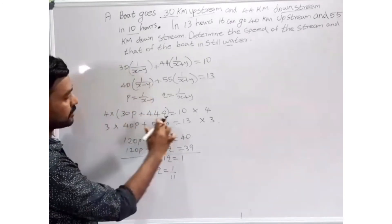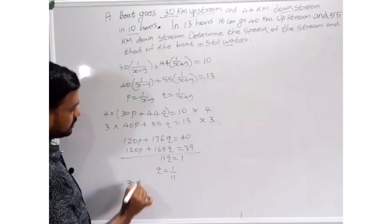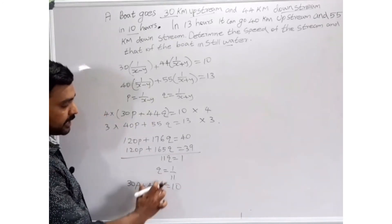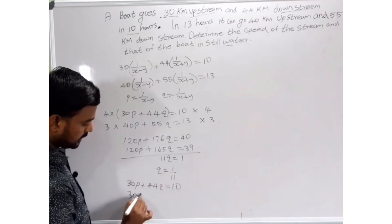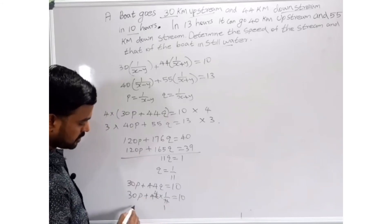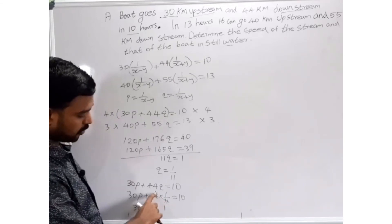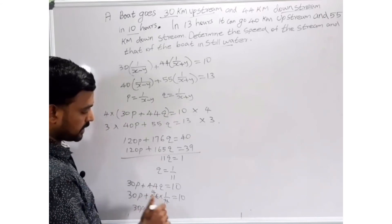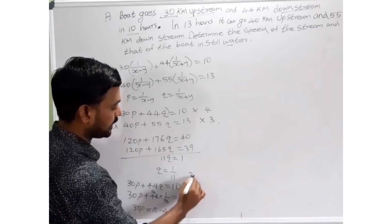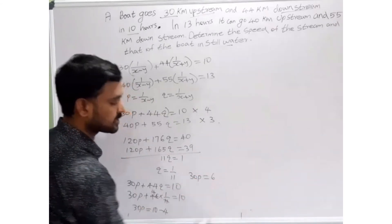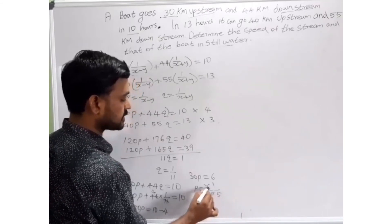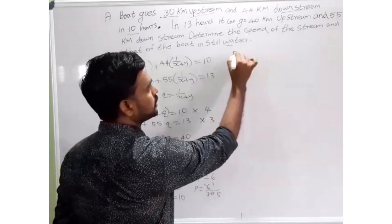Now substituting q = 1/11 into the simplest equation 30p + 44q = 10: 30p + 44 × (1/11) = 10. Since 44/11 = 4, we get 30p + 4 = 10. Transposing: 30p = 10 - 4 = 6. Therefore p = 6/30 = 1/5.